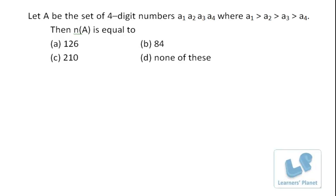Now friends, further we have an interesting problem. Let A be the set of four digit numbers a1, a2, a3, a4, where a1 is greater than a2, that is greater than a3 and that is greater than a4. Then n(A) is equal to, that means we have to find out the total number of four digit numbers when the digits, all the digits are in descending order. So pretty easy question but interesting as well.